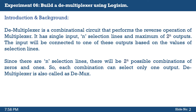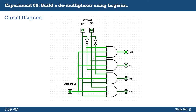The input will be connected to one of the outputs based on the values of the selection lines. With n selection lines there are 2^n possible combinations of zeros and ones, so each combination can select only one output. A demultiplexer is sometimes called a DEMUX. This is the circuit diagram of the demultiplexer, where we see two selection lines S1 and S2 and four output lines Y0 to Y3.